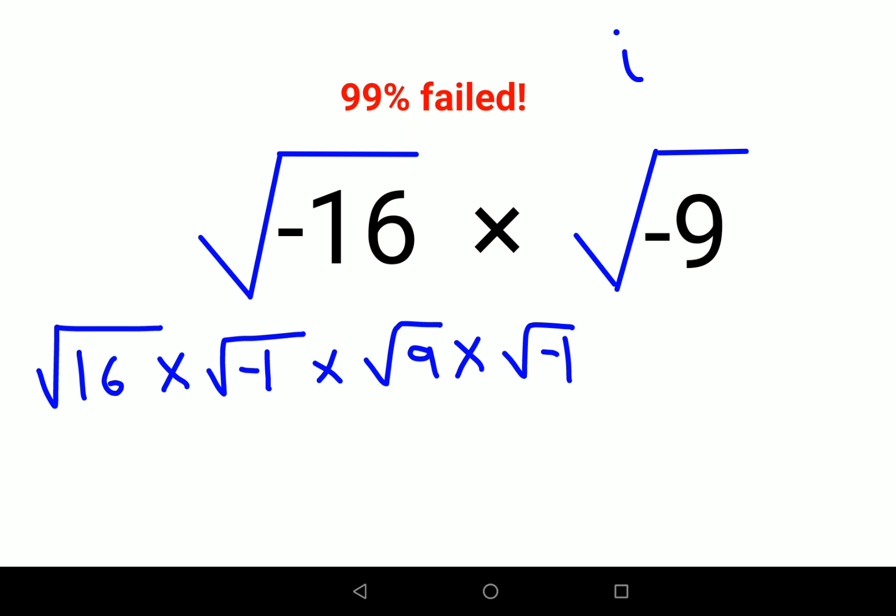We know that. So √16 is 4 times i, and √9 is 3 times i.